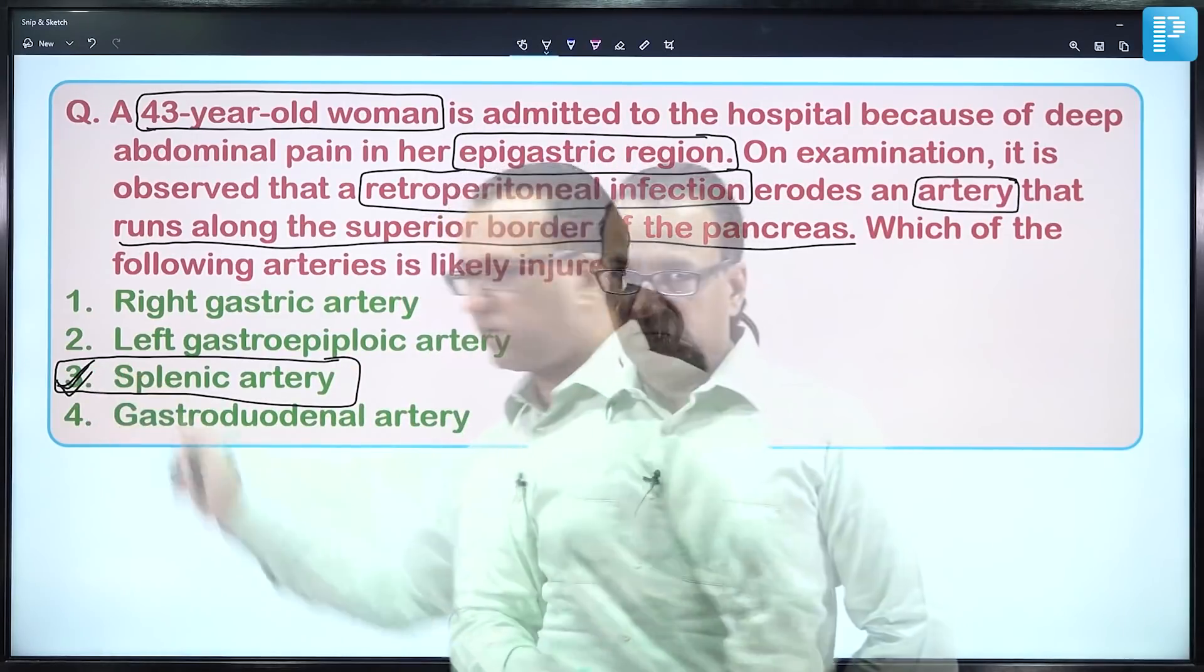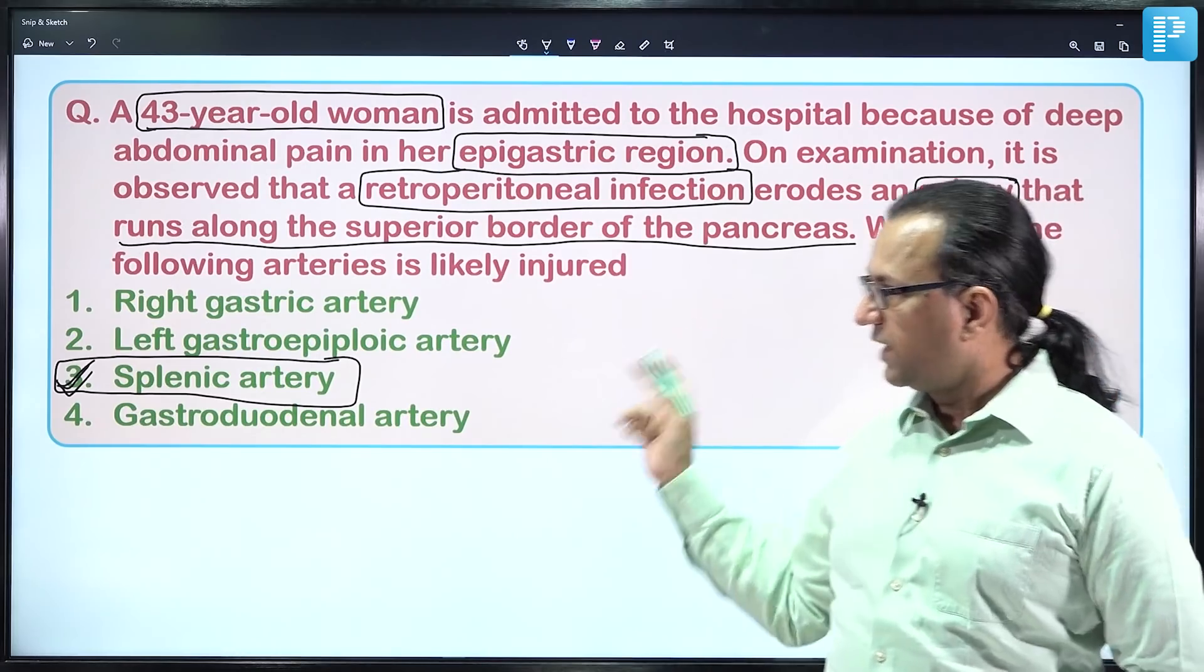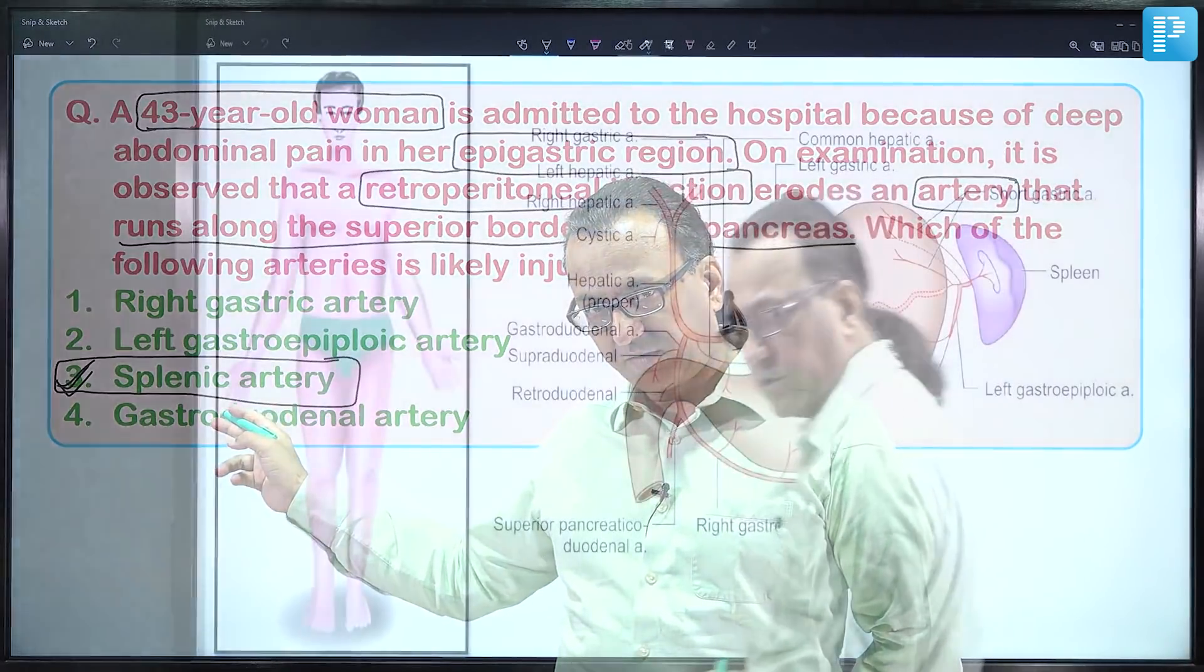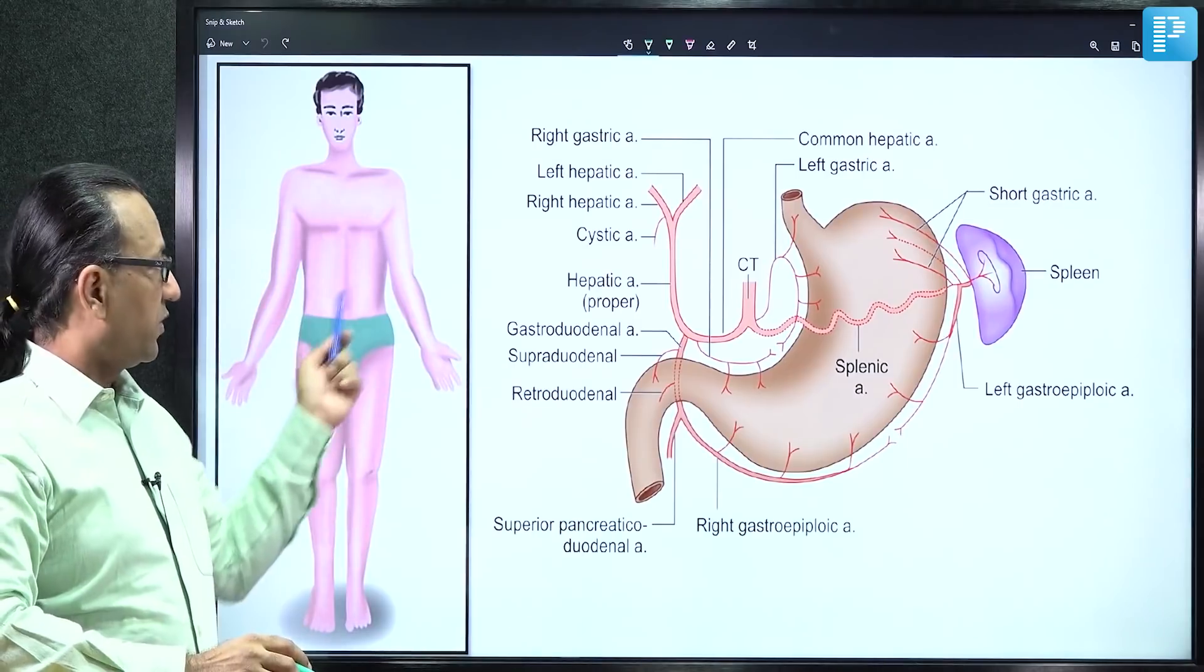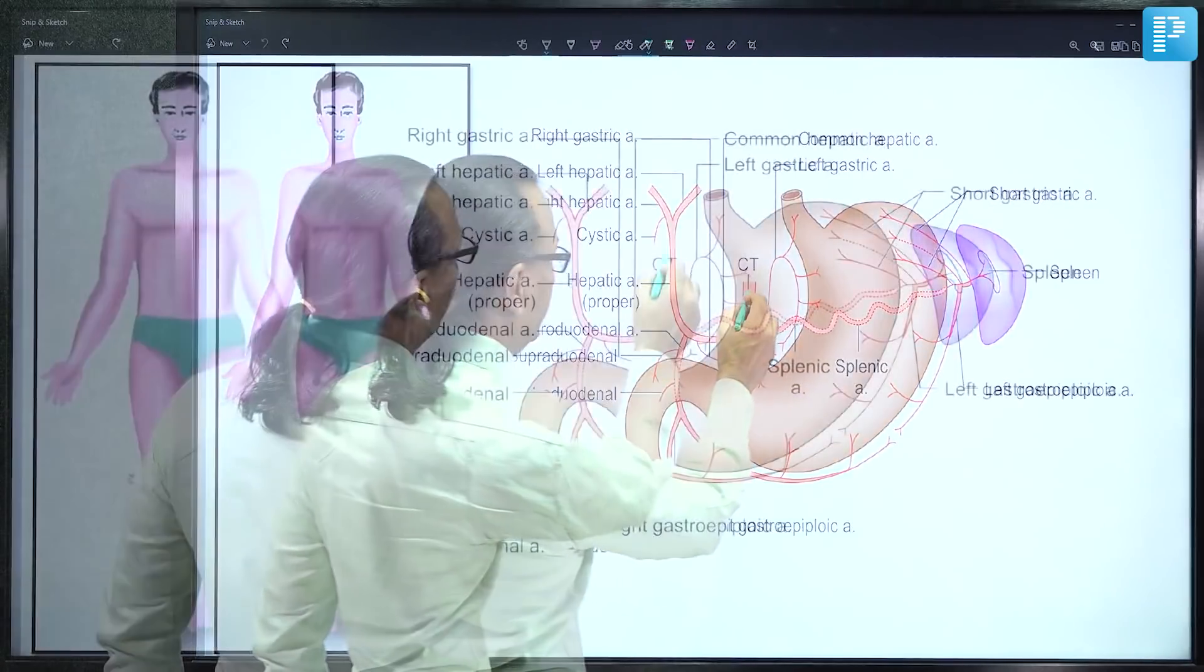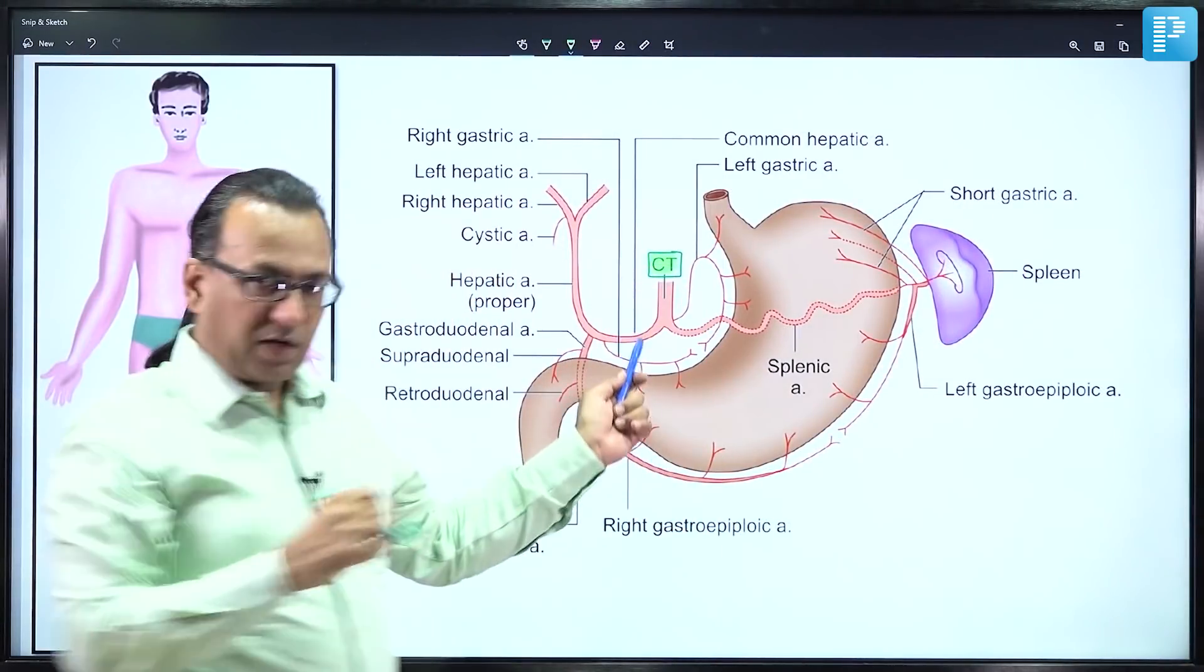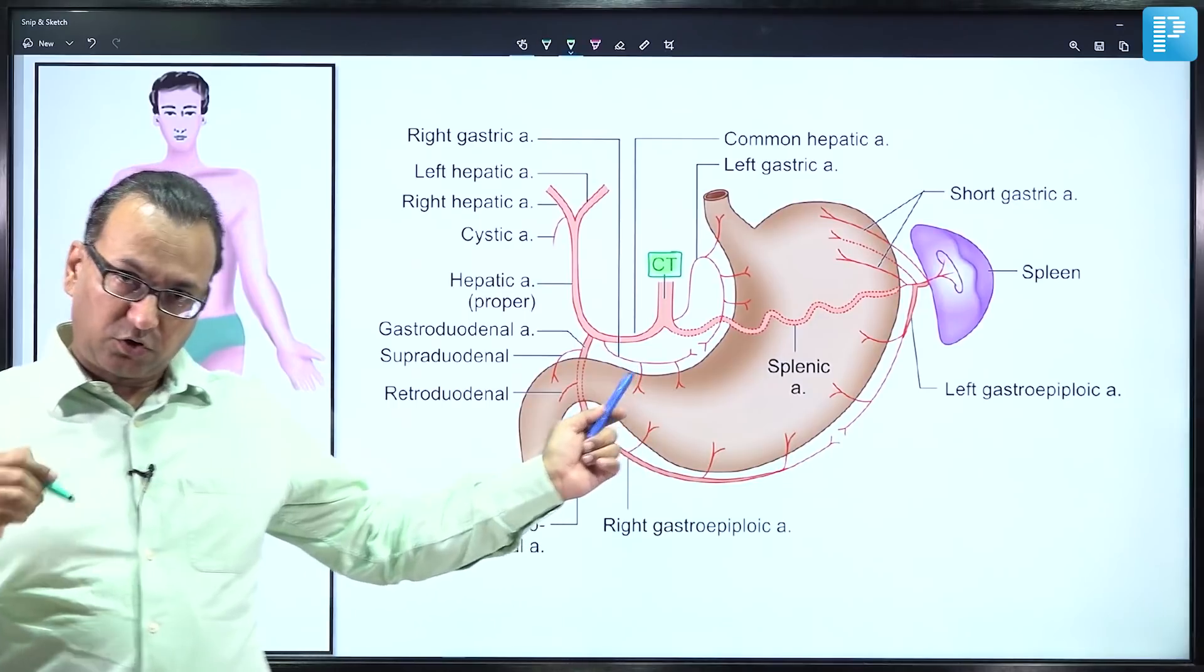Let's look at the diagram showing the course of this artery, keeping our answer as choice three. From the front view, the foregut artery called the celiac trunk—a branch of the abdominal aorta—gives three branches.